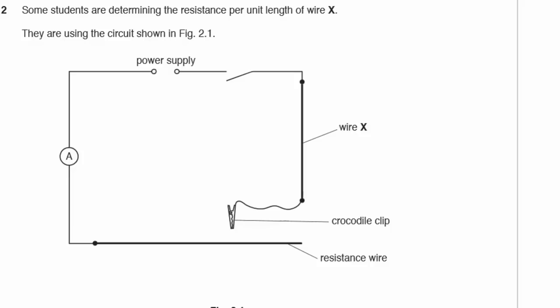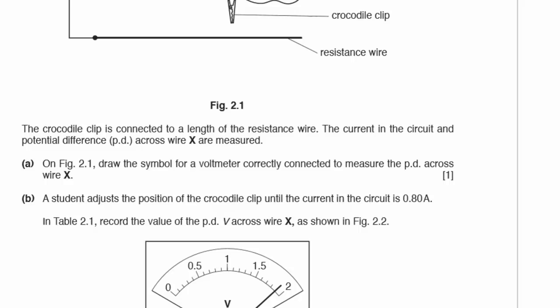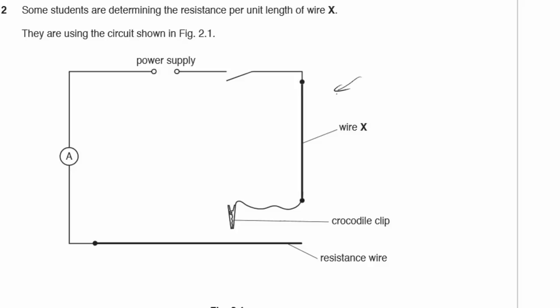Question 2. Some students are determining the resistance per unit length of wire X, using a circuit shown in figure 2.1. We have the resistance wire and a moving crocodile clip. On figure 2.1, draw a voltmeter symbol correctly connected to measure the potential difference across wire X — connect one end to each end of wire X in parallel.